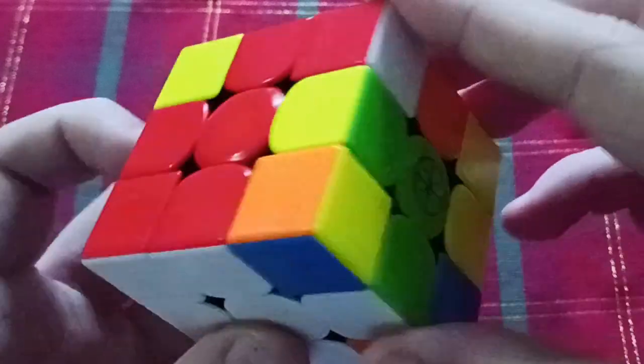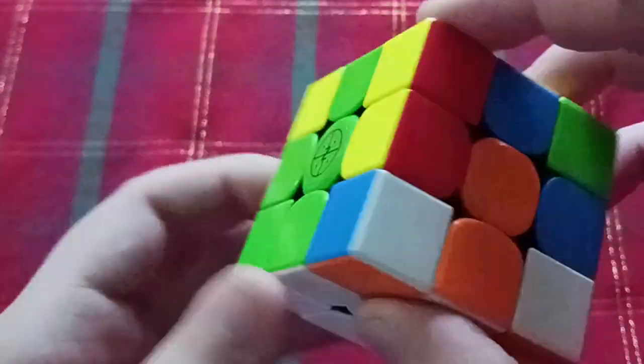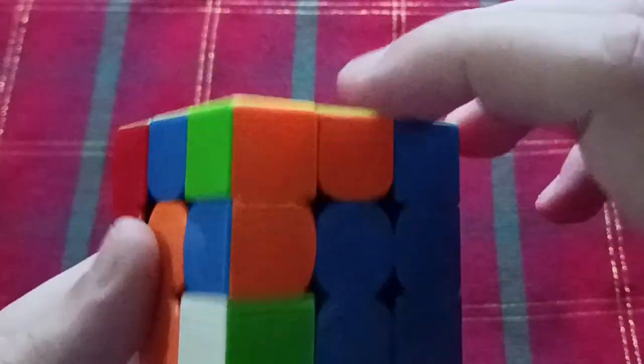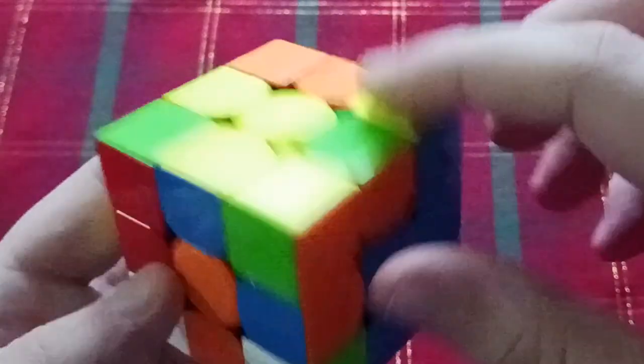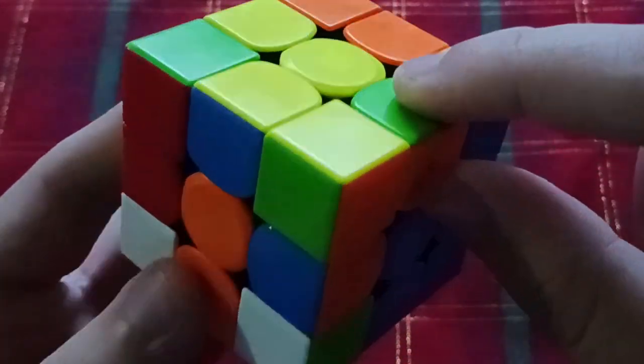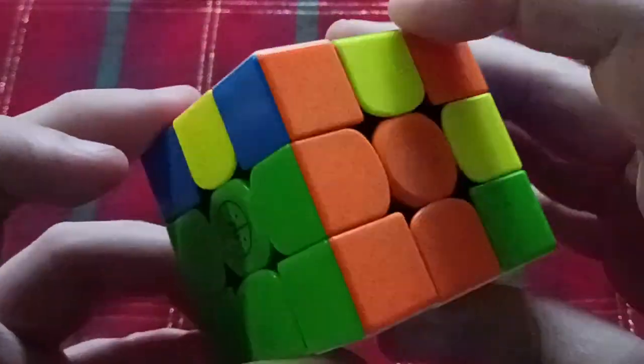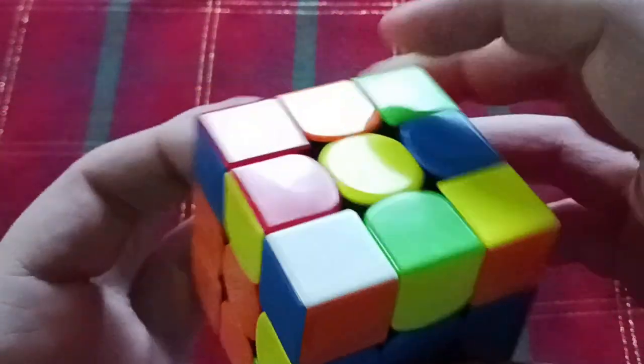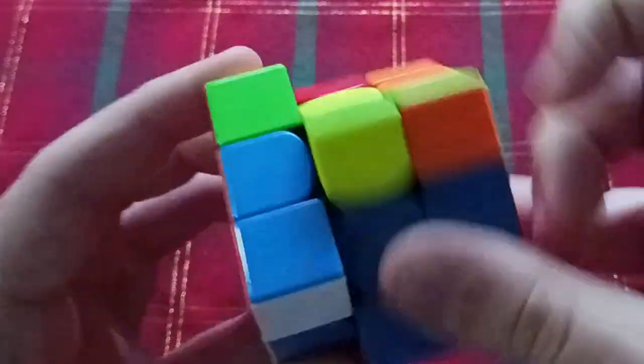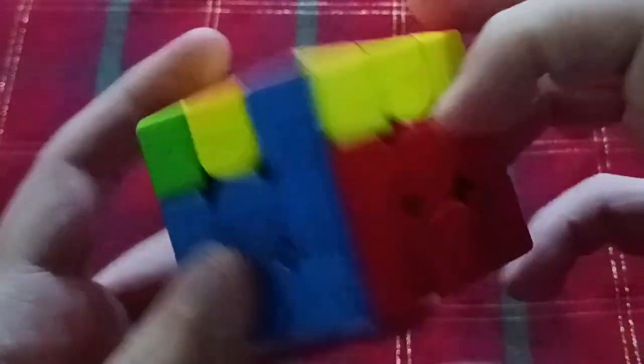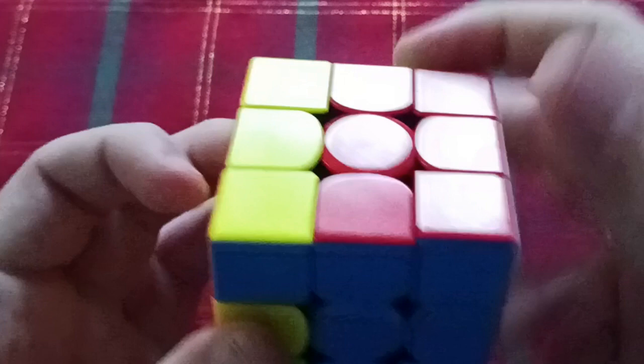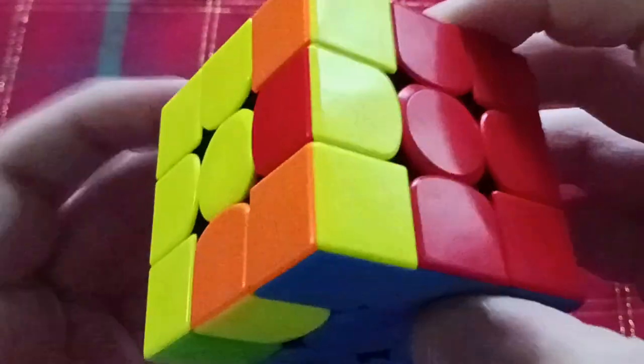You have these pairs which you just insert into the cross. And you also see this is one of the edges for the first two layers, and you just pair it up with its corner and you insert them like that. And there. That's the entire first two layers done in one step.